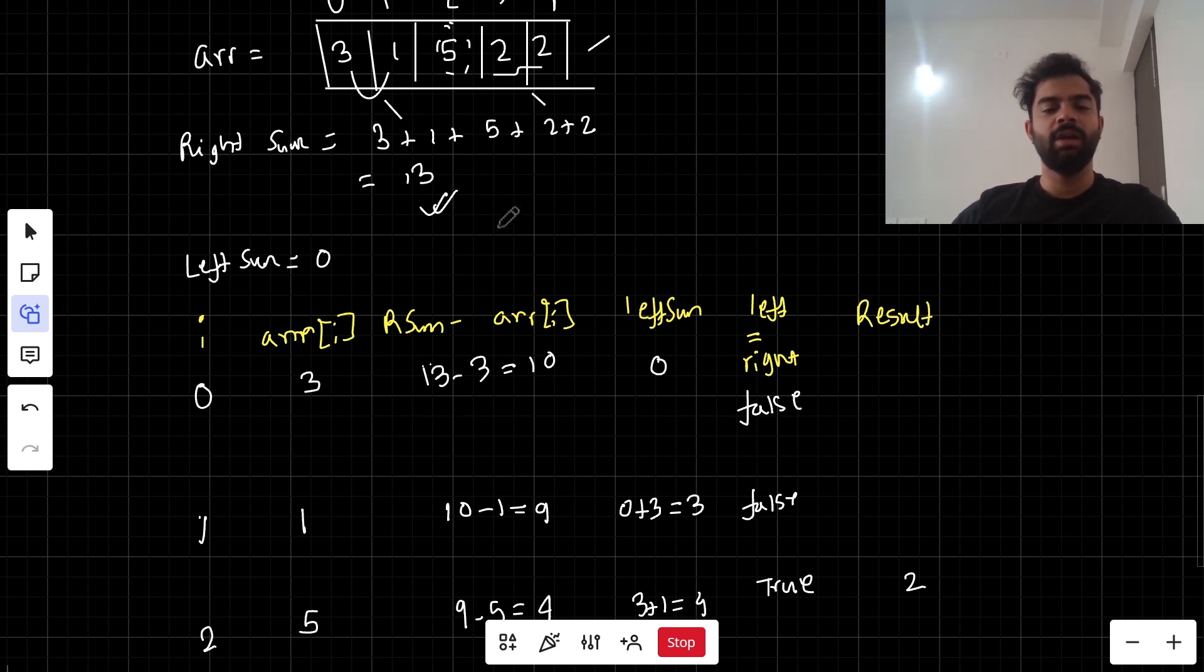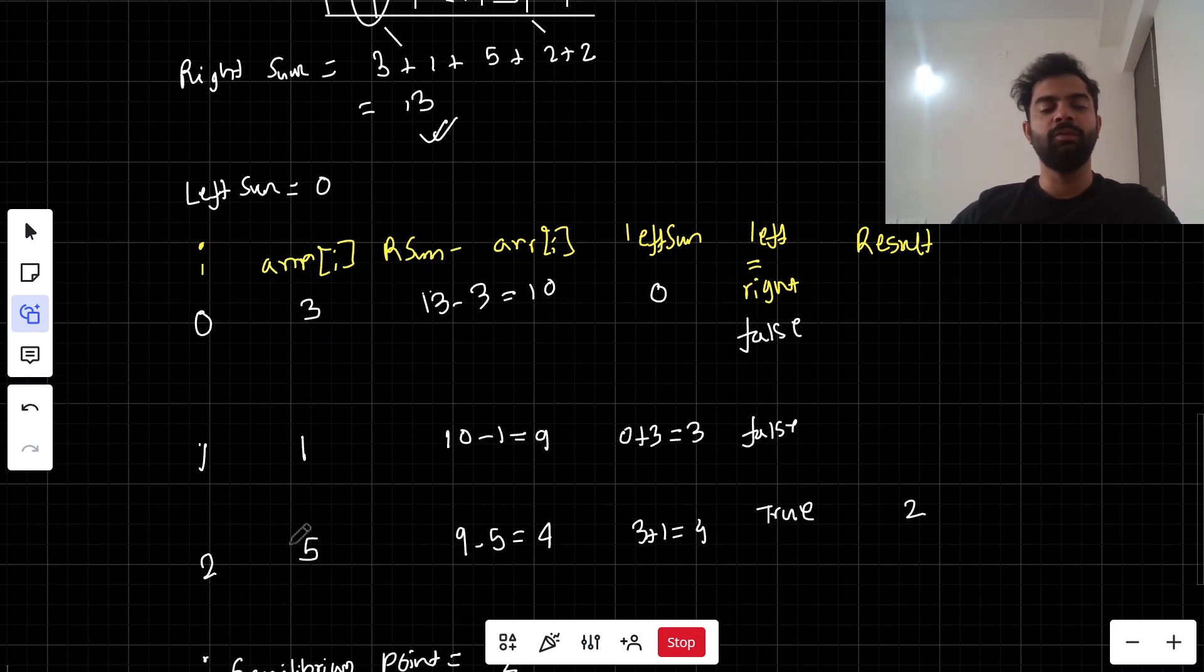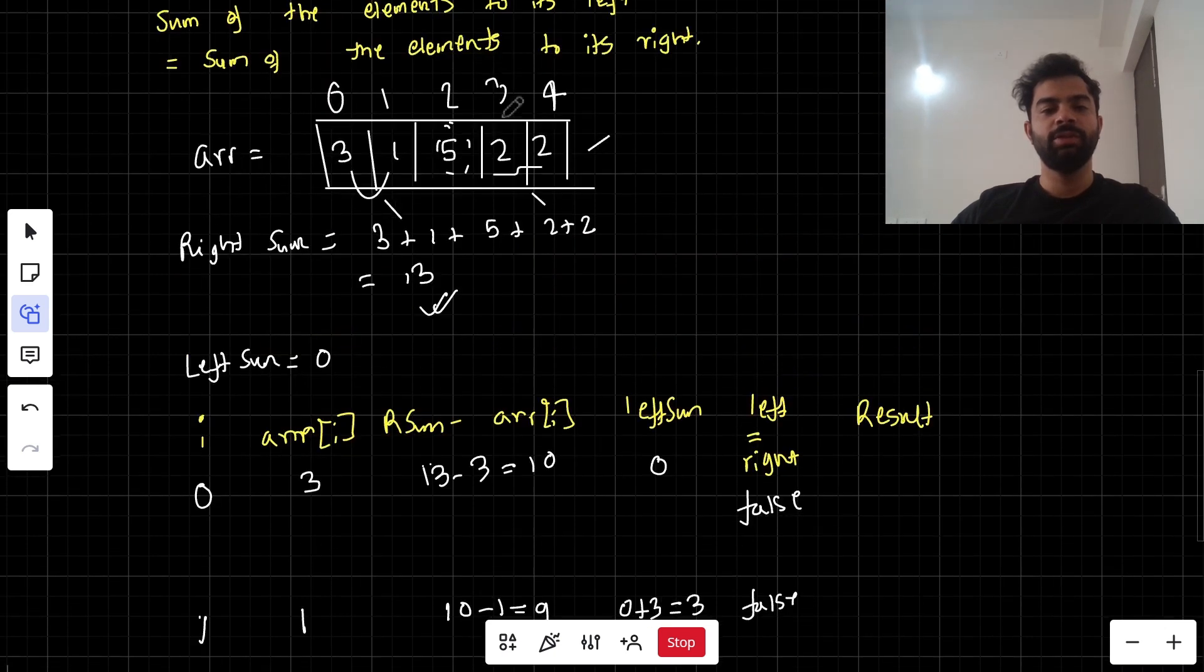Our previous difference was 10, so we do 10 minus 1 equals 9. Is 3 equals 9? No, it's false. In the third iteration we get the fifth element, which is the middle element.